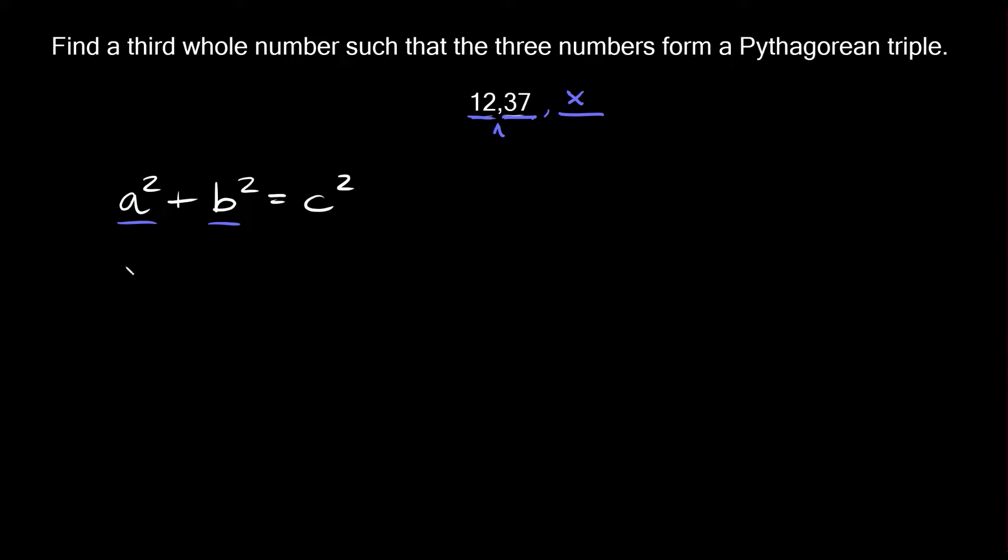In this case we can say that a is 12 so we'll have 12² + b², which is 37, so 37² = c².